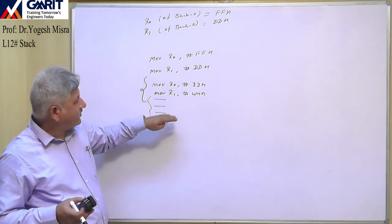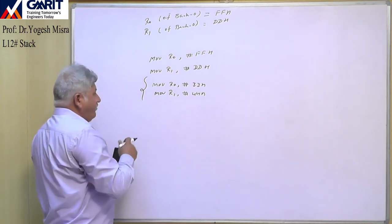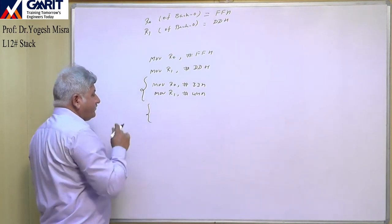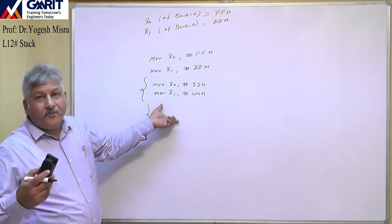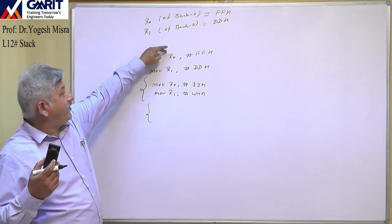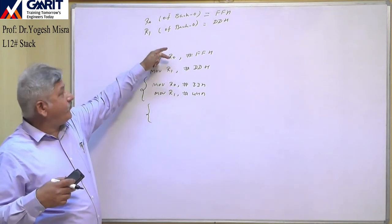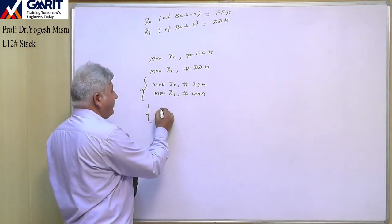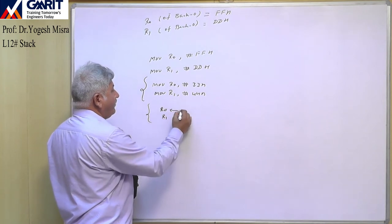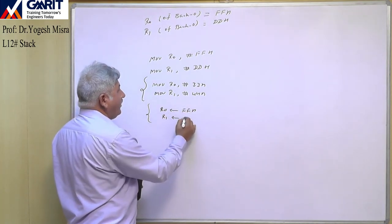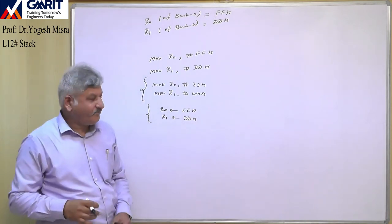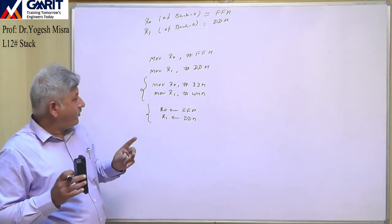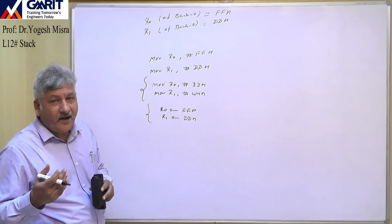Later, suppose we want the previous values which were in R0 and R1 — FFH and DDH — again in R0 and R1. So here we require R0 = FFH and R1 = DDH. We will use PUSH and POP instructions for this.